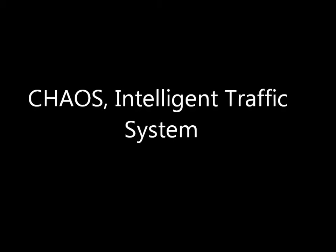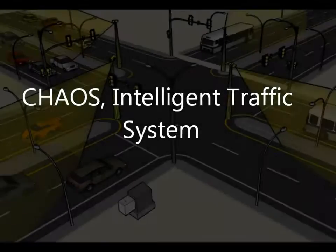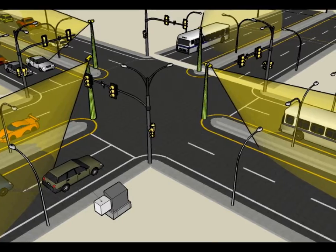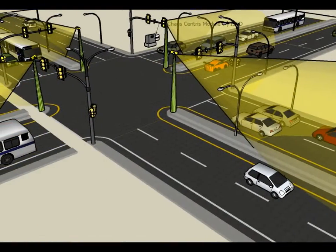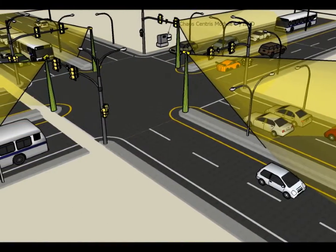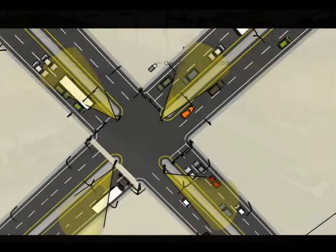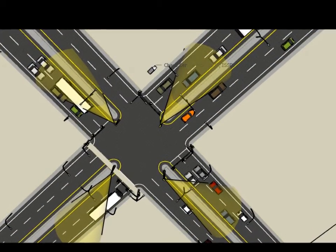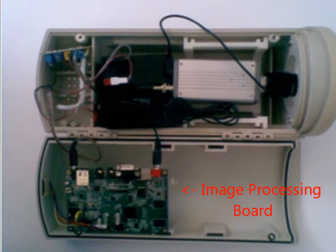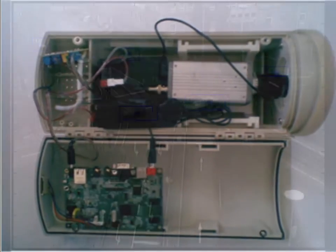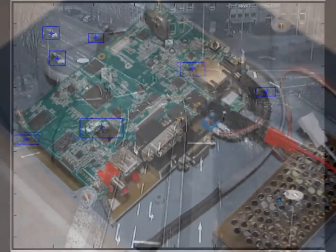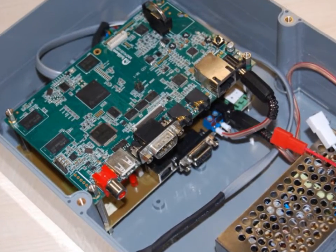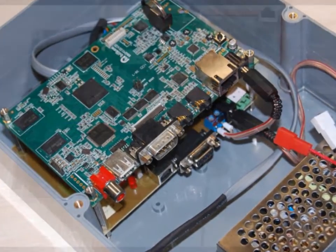The chaos system used at the junction consists of a number of cameras looking at each one of the directions, meaning one camera per direction. Each one of these cameras consists of an image processing board which gathers all the data generated by the video images. These can then be sent to the central processing unit, Centris.